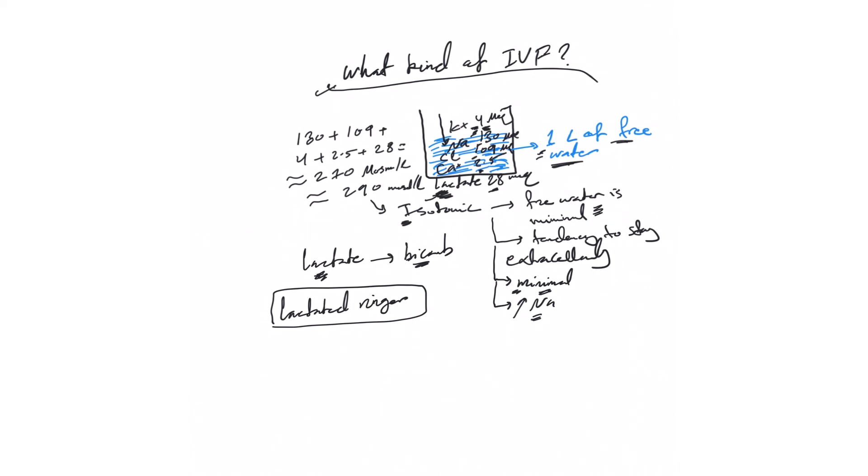So this is lactated Ringer solution. It's similar to 0.9% normal saline in that it's isotonic and free water is minimal with tendency to stay extracellularly. But the difference is the minimal risk of hyperchloremic acidosis, and it can cause hypernatremia although we see it more with normal saline. So the risk of hypernatremia is less than normal saline.